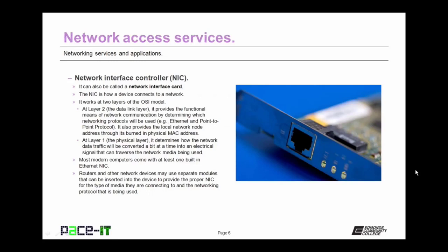At Layer 1 — the physical layer — the Network Interface Controller determines how network data traffic will be converted, a bit at a time, into an electrical signal that can traverse the network media being used — it provides the physical connection to the network. Most modern computers come with at least one built-in Ethernet NIC. Routers and other network devices may use separate modules inserted into the device to provide the proper network interface controller for the type of media and networking protocols being used.